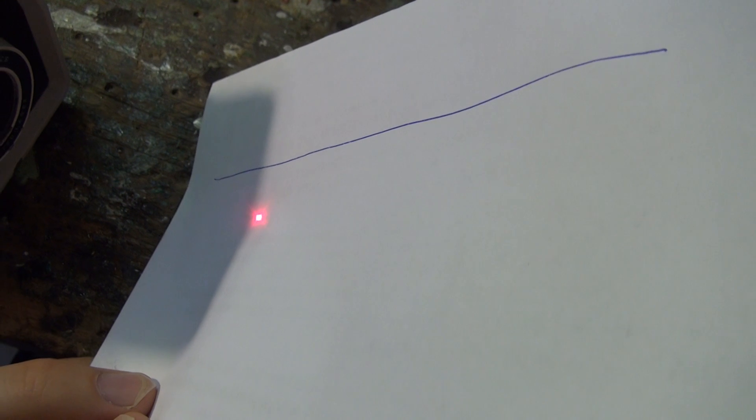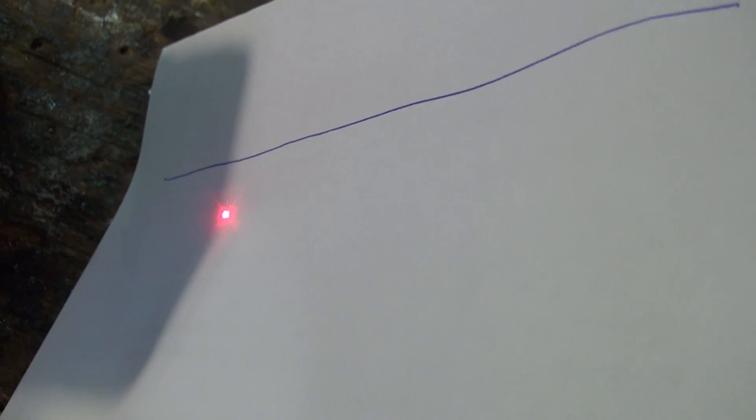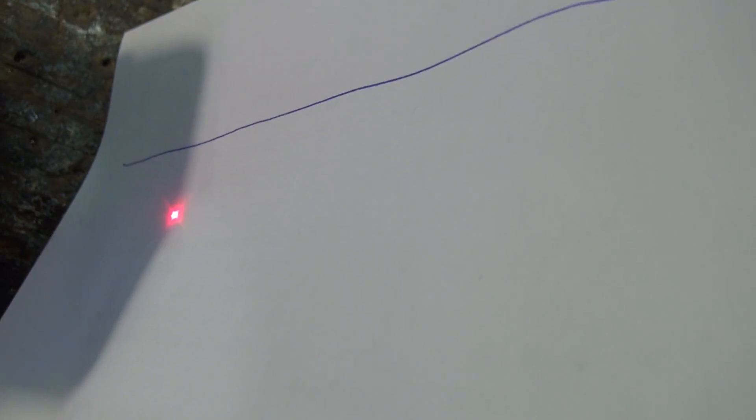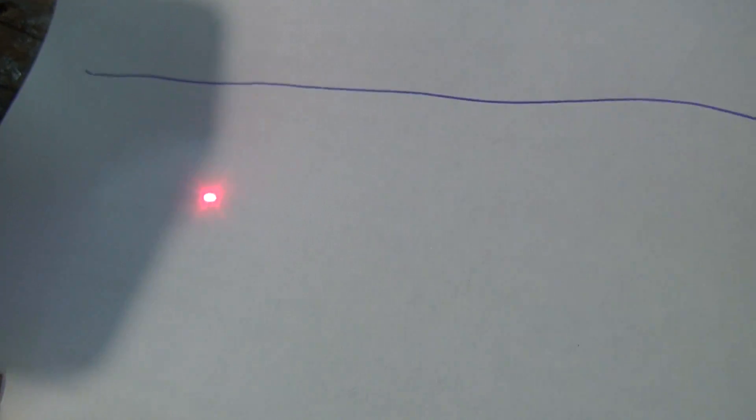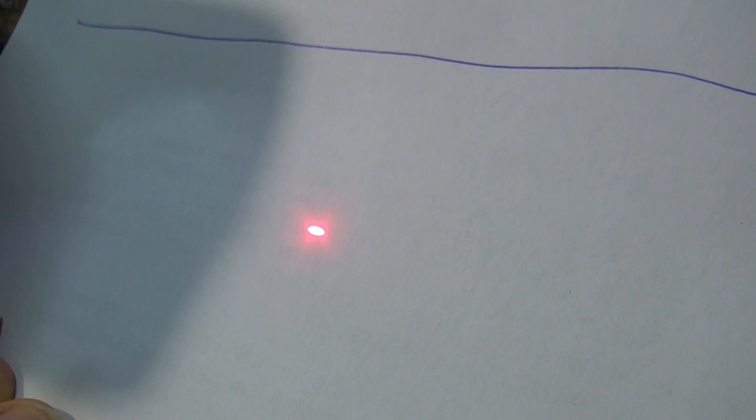So one last word about the correction lens assembly. Of course, when the laser is scanning, it gets reflected at an angle. So as the angle grows, your dot is no longer a dot. It starts to become an oval. And that's why you need your correction lenses.